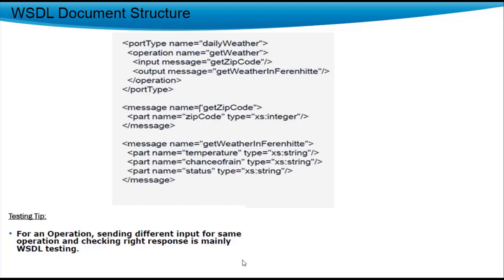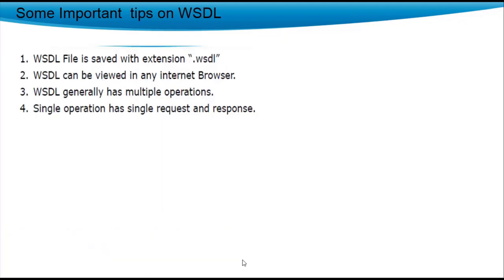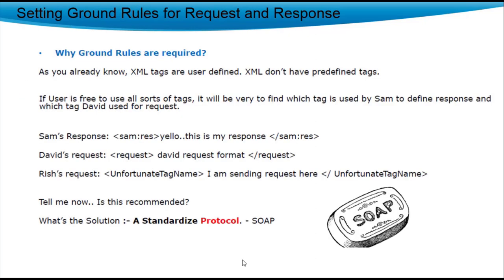A WSDL file is saved with the extension .wsdl. It can be viewed in any internet browser. WSDL can generate multiple operations, with a single operation as a single request and response.